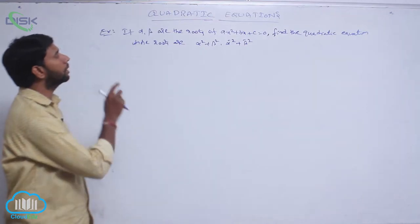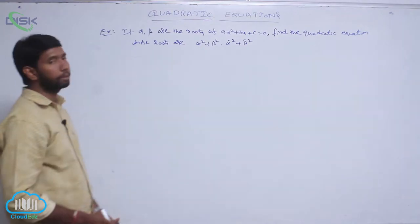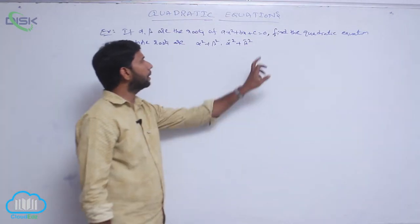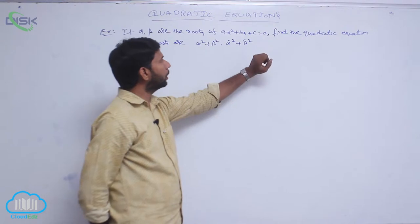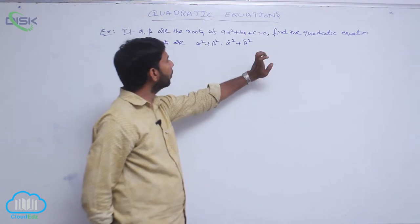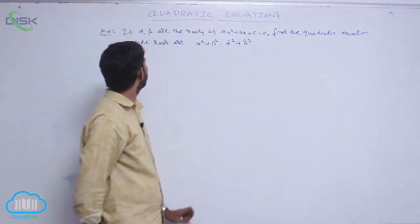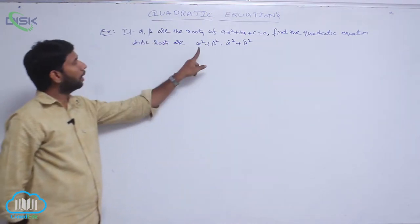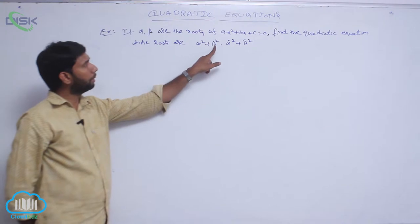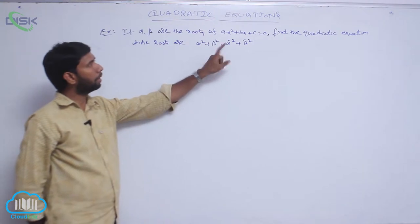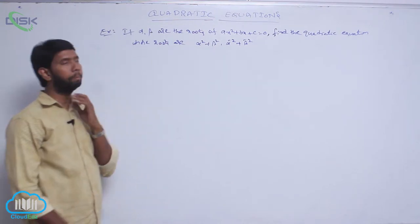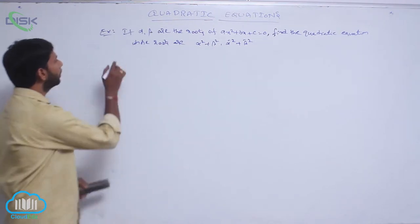If α and β are the roots of the equation ax² + bx + c = 0, then find the quadratic equation whose roots are α² + β² and α⁻² + β⁻².